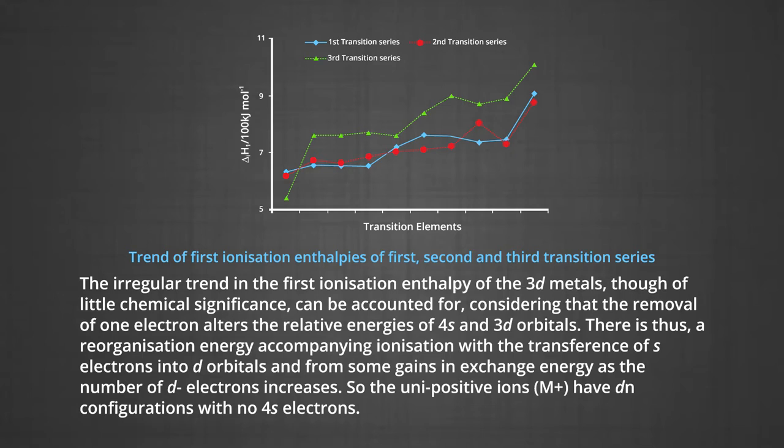However, the value for chromium is lower because of the absence of any change in the D configuration, and the value for zinc is higher because it represents an ionization from the 4S level. This describes the trend in the first ionization enthalpy of the first, second, and third transition series.